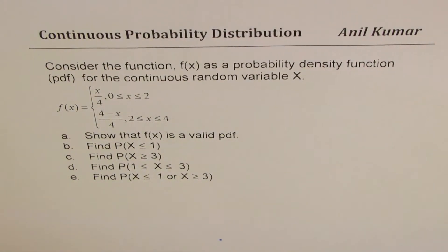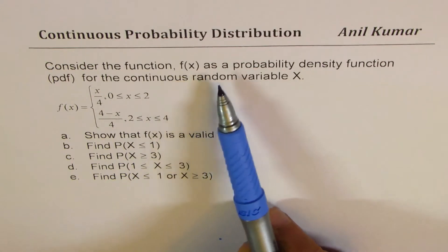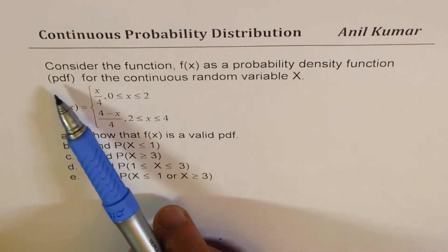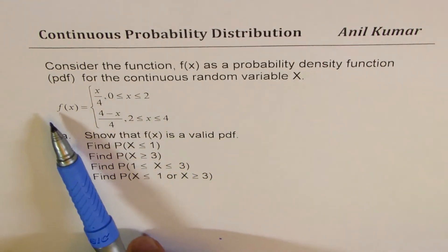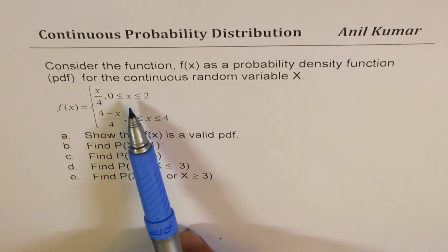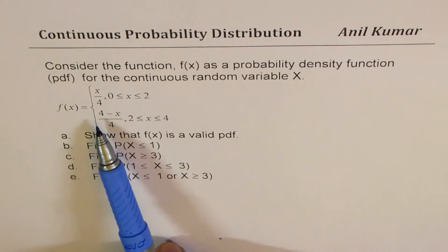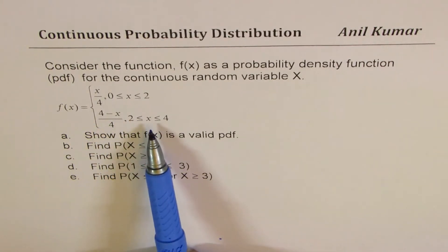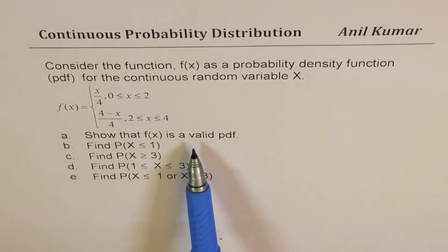I'm Anil Kumar sharing with you a question from my subscriber, and I hope its solution will help many others. It is based on continuous probability distribution. The question is: consider the function f(x) as a probability density function (PDF) for the continuous random variable x. f(x) = x/4 when x is between 0 and 2 (both included), and equals (4 - x)/4 when x is between 2 and 4.